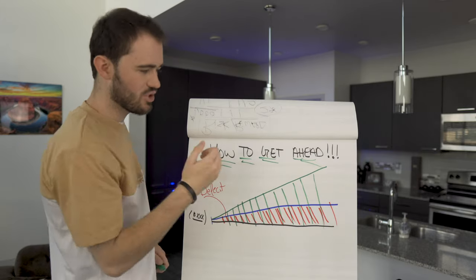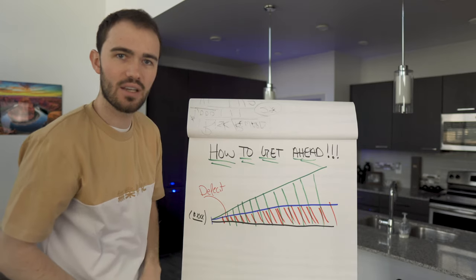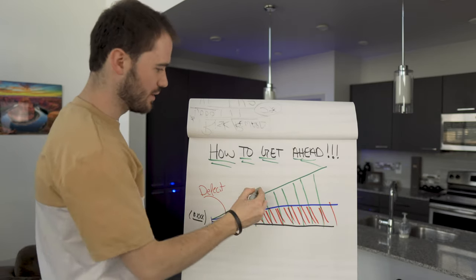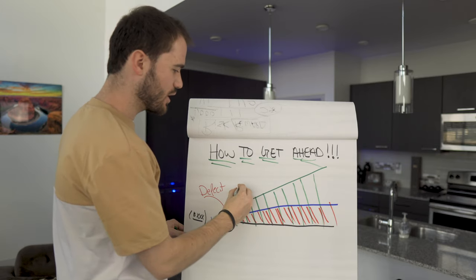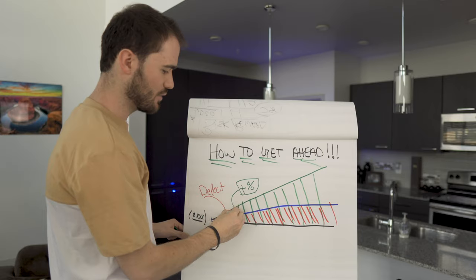This is the type of information you must understand. So now that we have seen a visual representation, how do we actually get ahead? Well, it comes down to this green area.